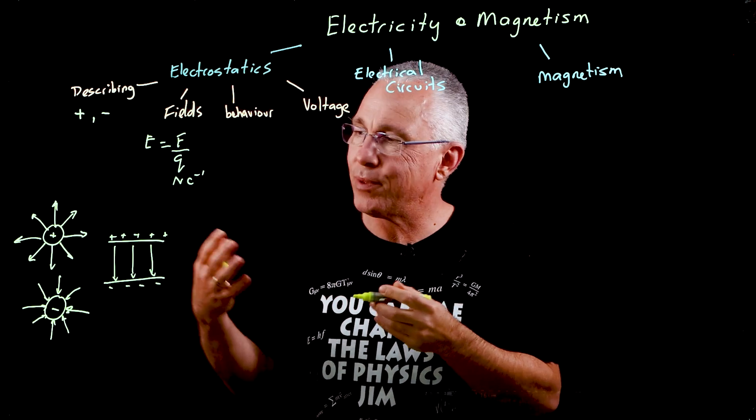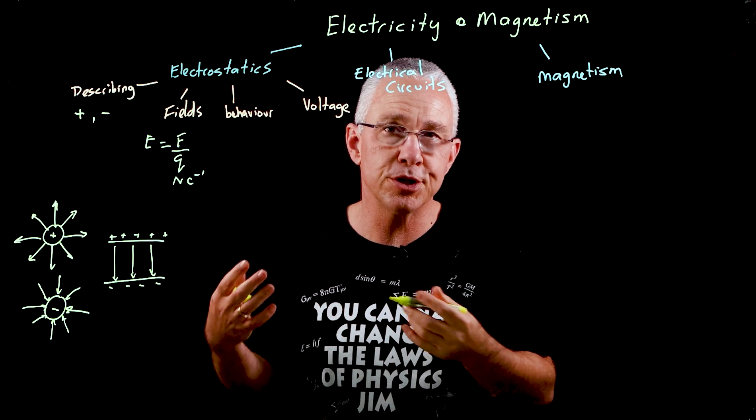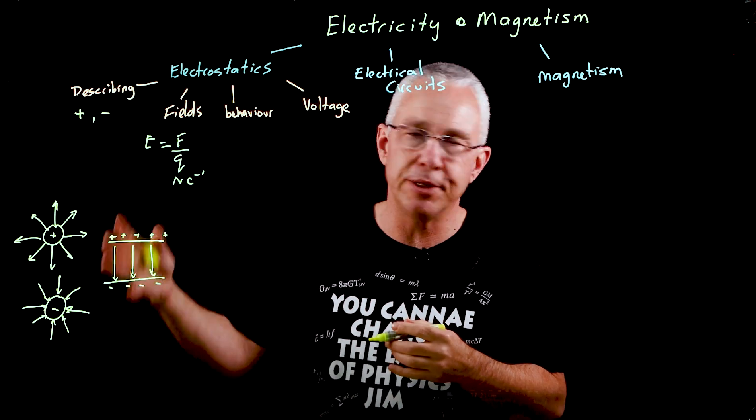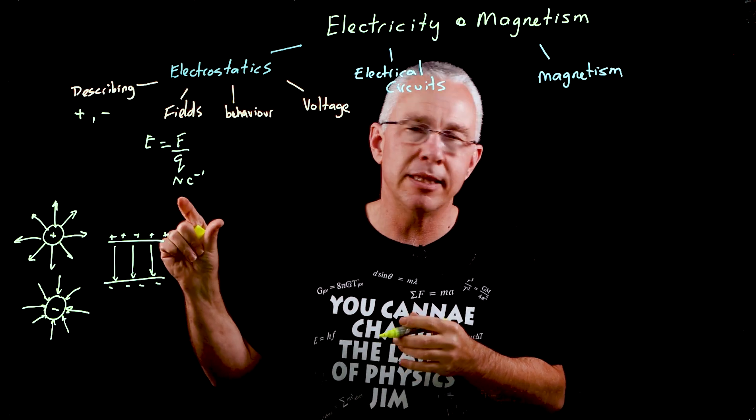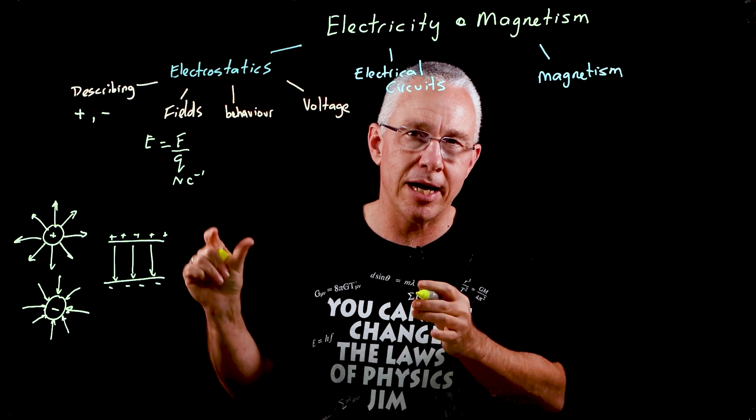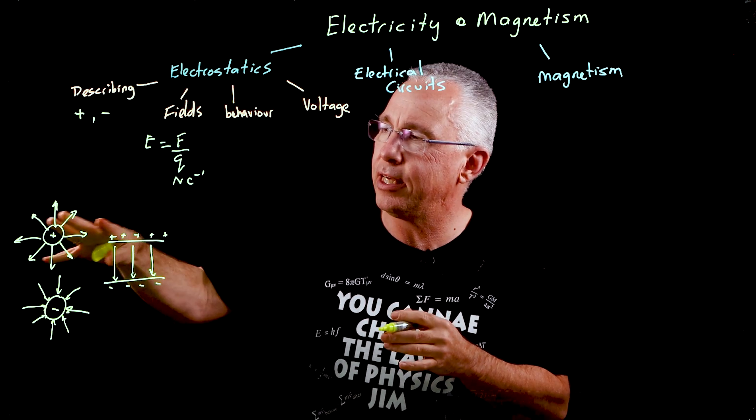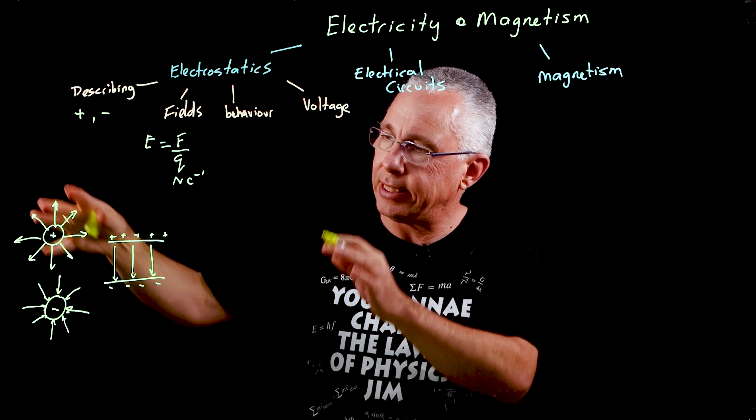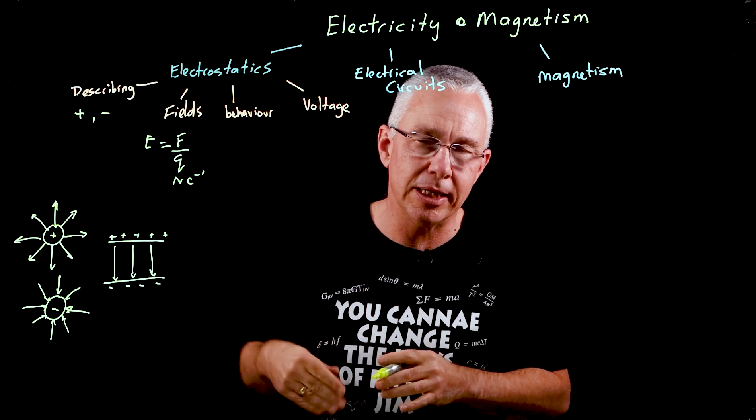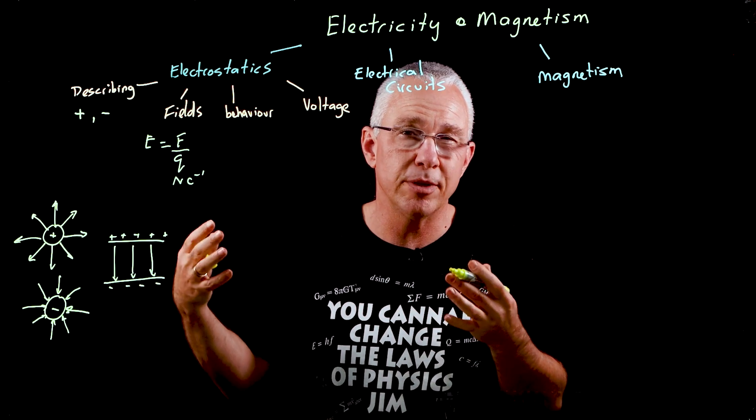What these lines represent is the direction of force that a positive test charge will experience in those fields. The separation of our arrows represents the strength. Here, the field strength is getting weaker as we radiate out, and because these lines are parallel, we say that the field is uniform—that is, the force experienced by a charge in that field remains constant.